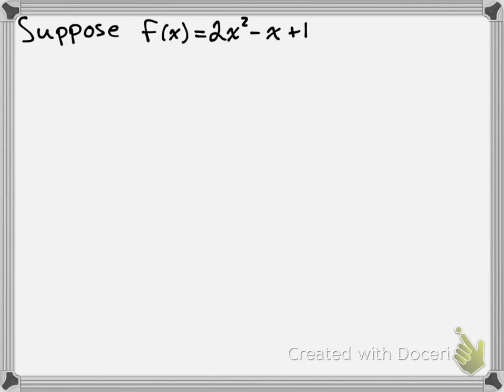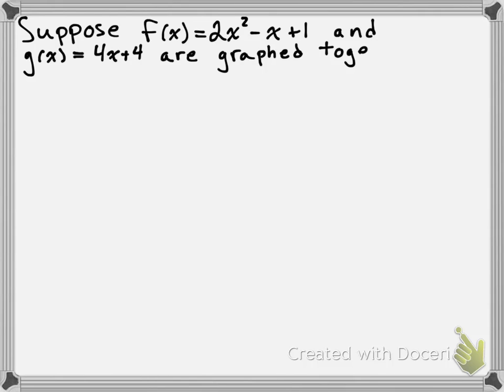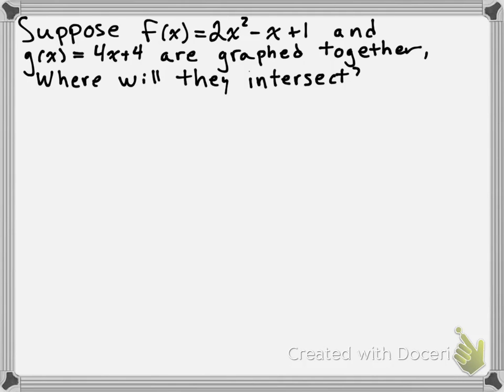Today we're going to look at linear quadratic systems. We're going to suppose that we have a function f(x) = 2x² - x + 1, and g(x) = 4x + 4, and they're graphed together. The question is: at which points will they intersect? f(x) is a quadratic function and g(x) is a linear function. A linear quadratic system is what happens when you have a quadratic function and a linear function considered at the same time.